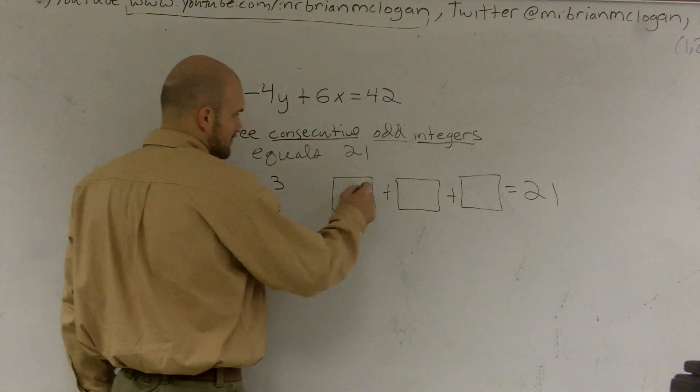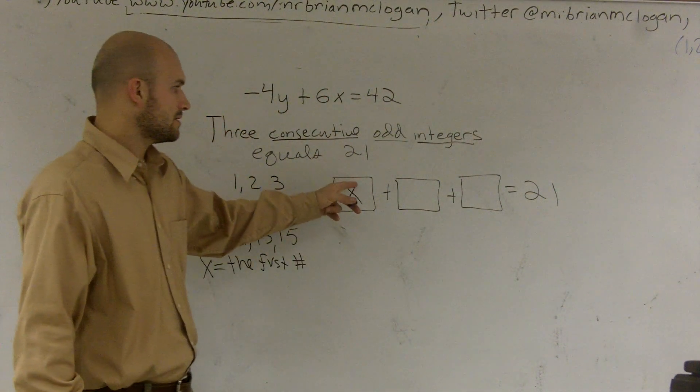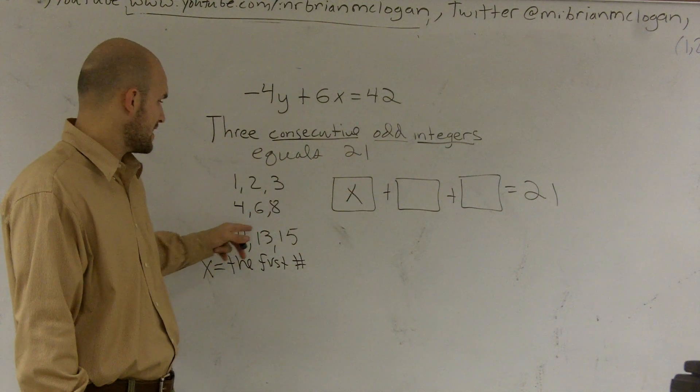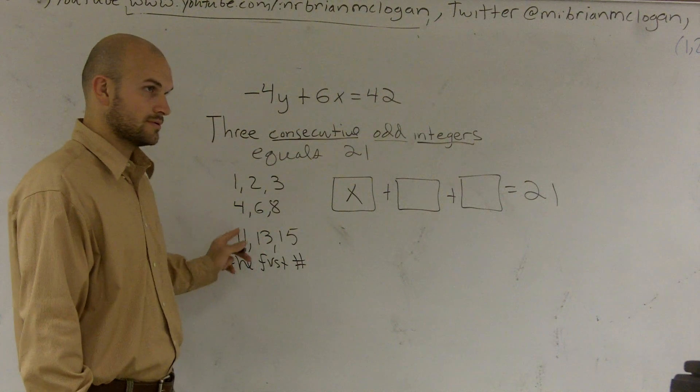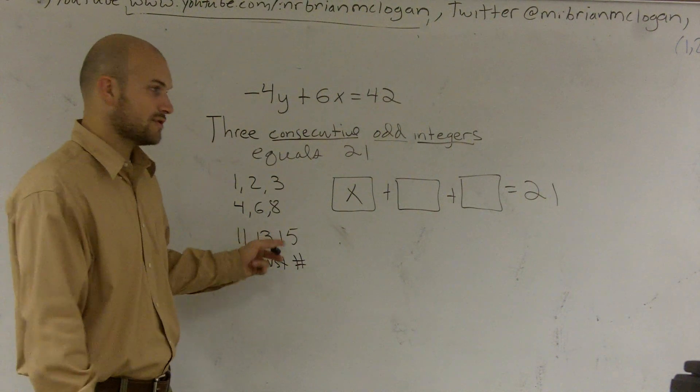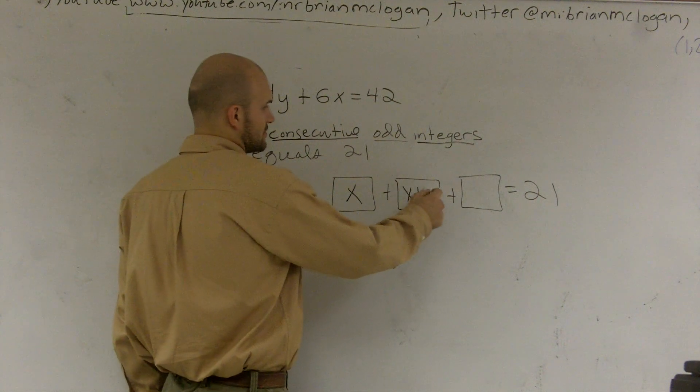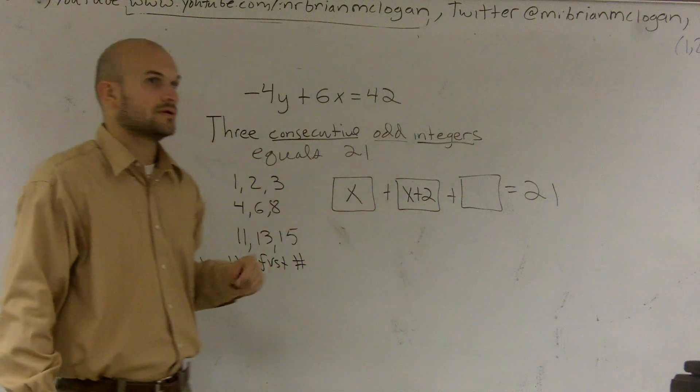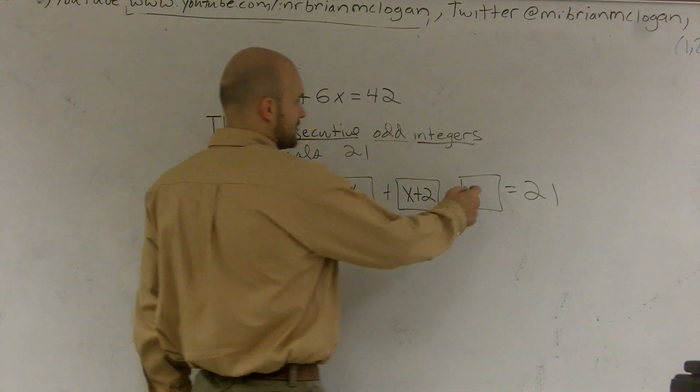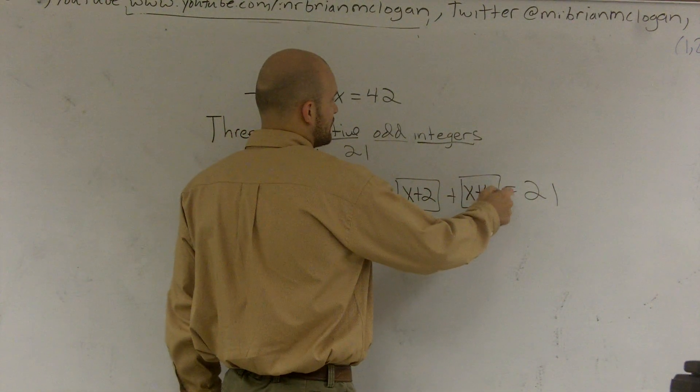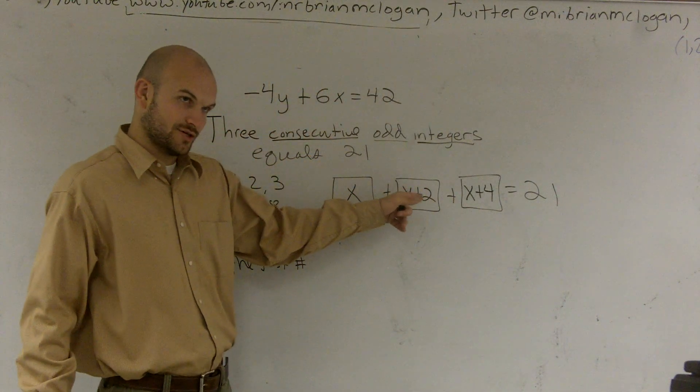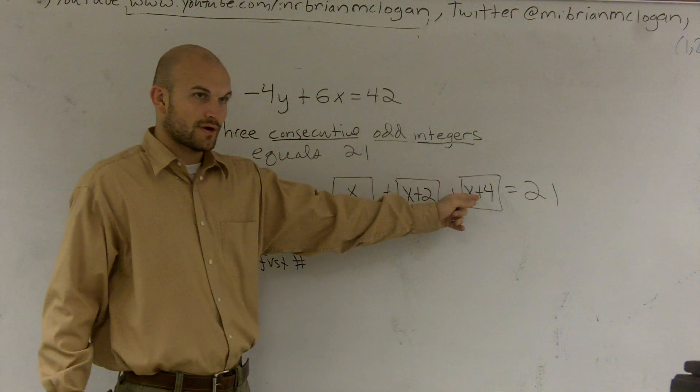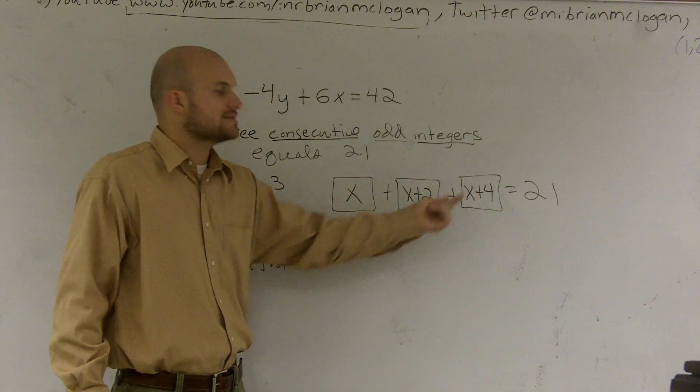So if I said X is the first number, what do I have to do to get to my next number? What is the difference between my first number and my next number? Two. You had to add two. So I had to do X plus two. Then to get from here to here, what do I have to do? Add two again. So I'd have to do X plus four because I'm adding two to my other two. It's adding four to go from here to here. So X plus two plus two is X plus four.